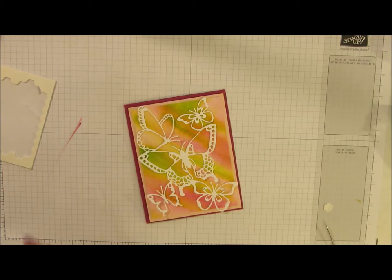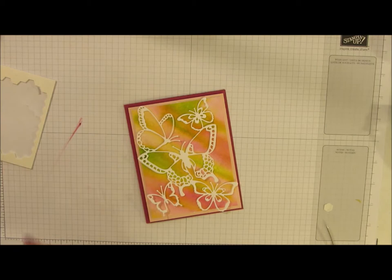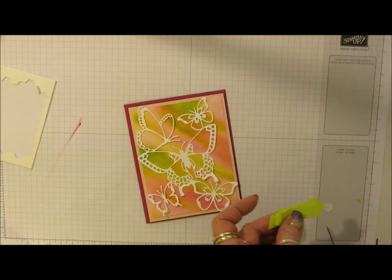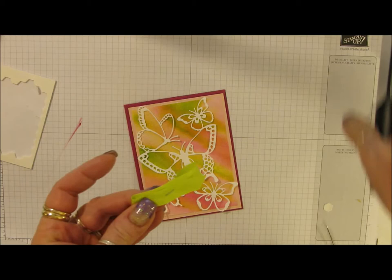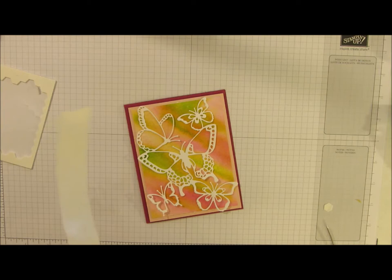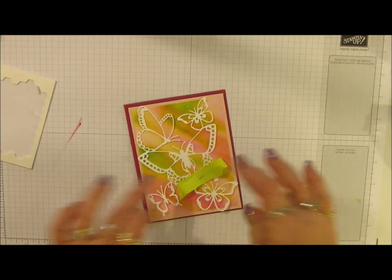Then my piece of lemon lime twist ribbon - I just folded it over itself. I cheated and I used my stapler, my small stapler to hold it together and I'll put a glue dot behind that to hold it to the base.